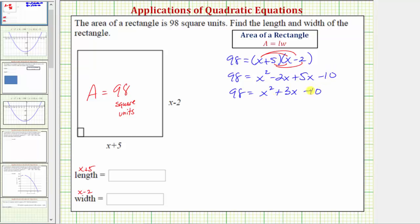Because we have a quadratic equation, let's set it equal to zero and see if we can solve by factoring. So we'll subtract 98 on both sides of the equation. 98 minus 98 is zero, so we have zero equals x squared plus 3x, negative 10 minus 98 is negative 108.